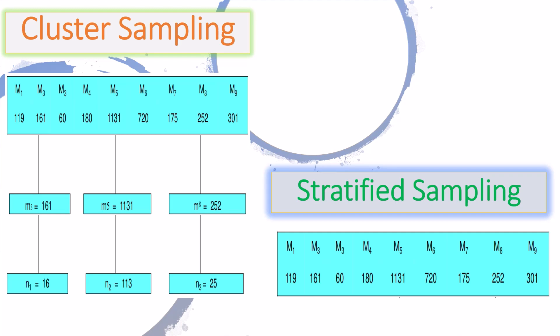Stratified sampling differs from cluster sampling. In cluster sampling, a few clusters are chosen from several clusters and subsamples are drawn from these chosen clusters only. In stratified sampling, subsamples are drawn from all strata.